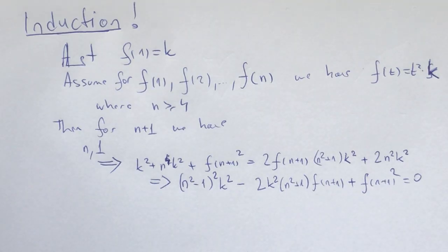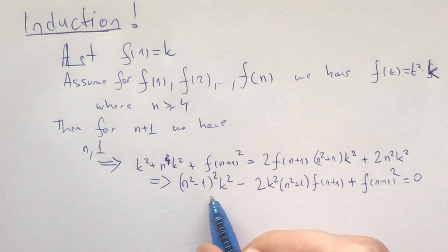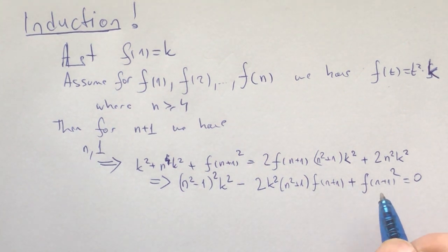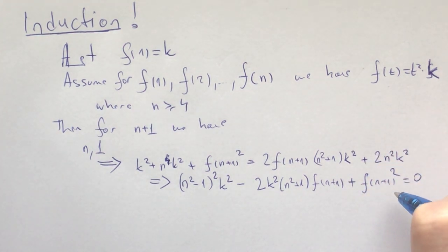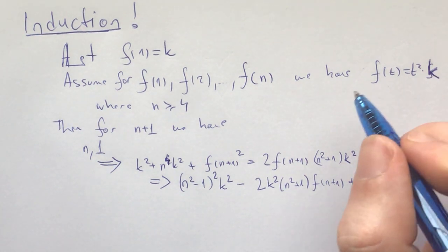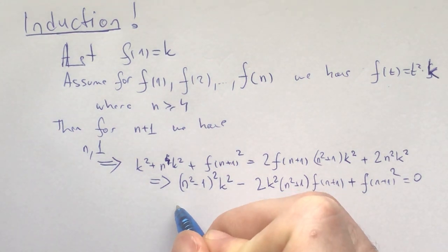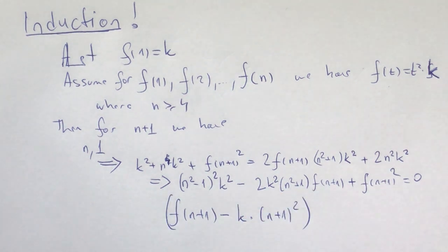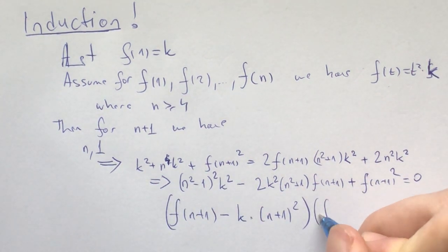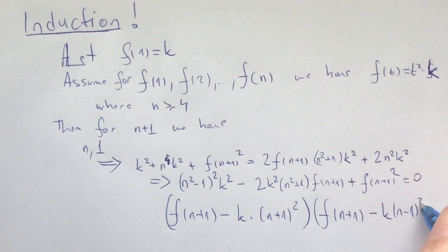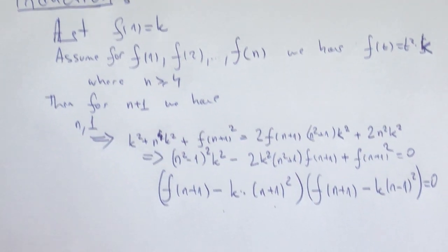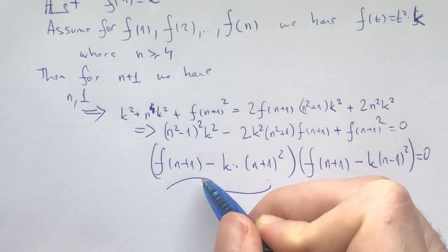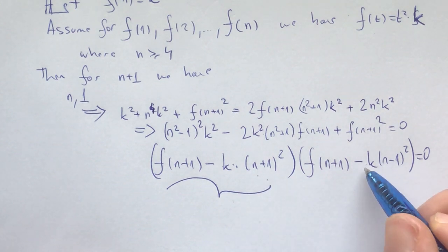We plug in n and 1, similar to how we plugged in 1 and 3, or 1 and 2, and get a large equation. It looks scary and difficult to factor, but knowing we're aiming for f(n+1) = (n+1)²·k gives a hint. We should factor to get (f(n+1) − k(n+1)²)·(f(n+1) − k(n−1)²) = 0, which gives us that f(n+1) is either k(n+1)² or k(n−1)².